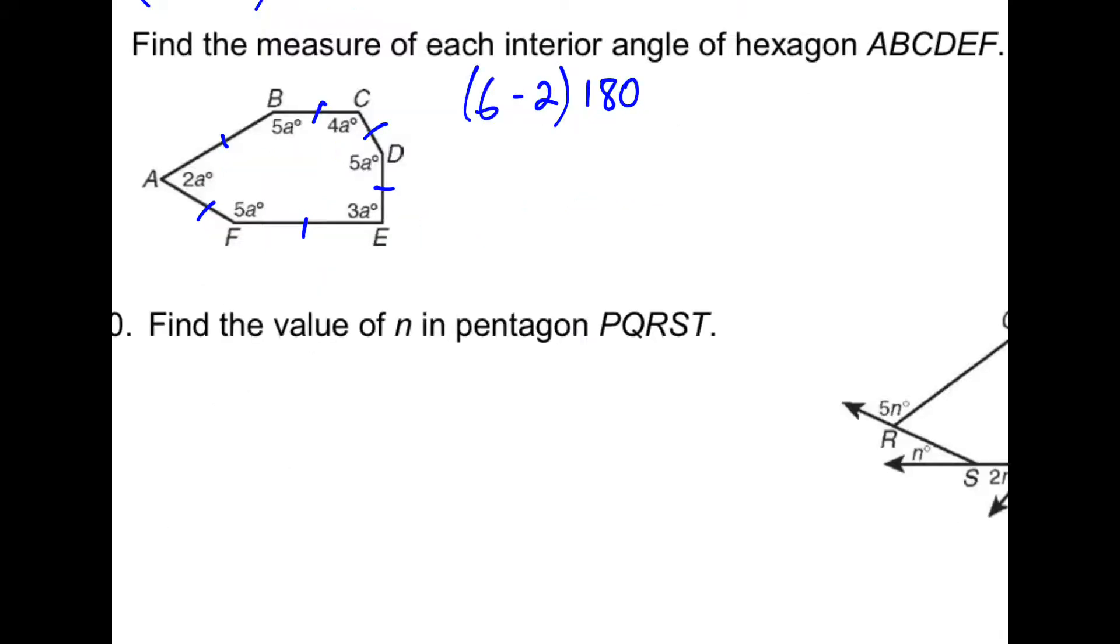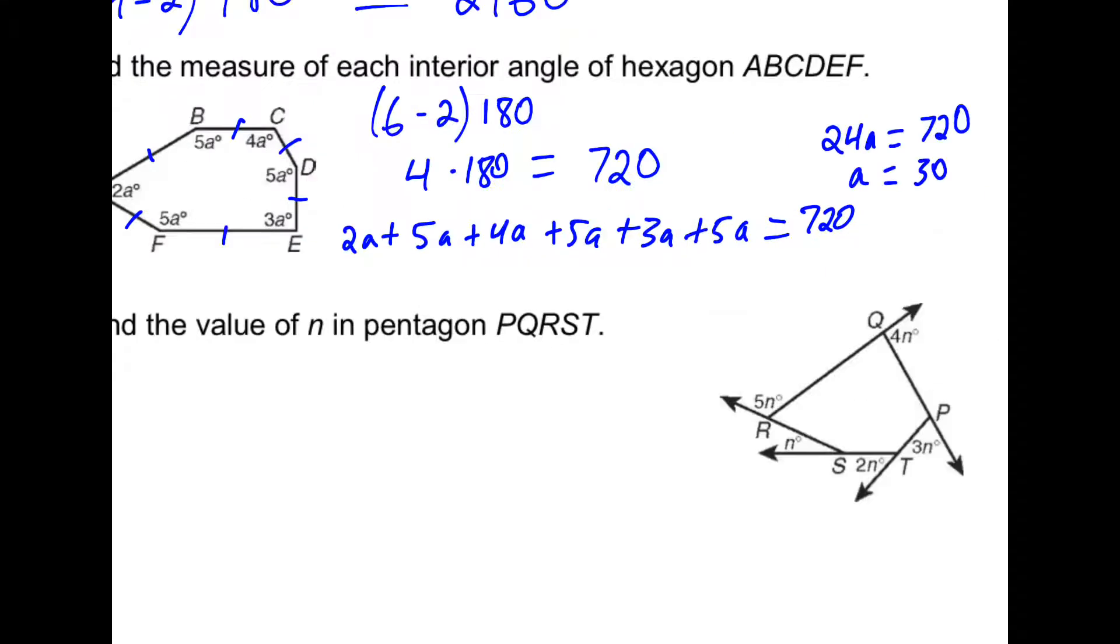For number nine, we're going to use the n minus 2 times 180 formula to figure out the sum of the interior angles. Since there are six sides, we plug in a 6, 4 times 180 gives us 720. So we add together all of these different angles, and the sum is 720. So 24a is equal to 720, so a is 30.